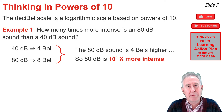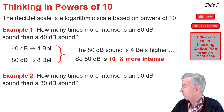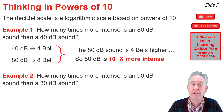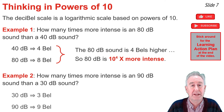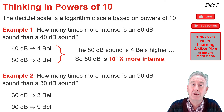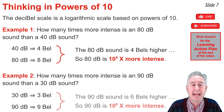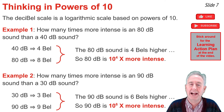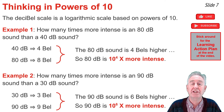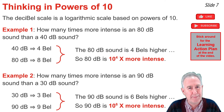Example two: how many times more intense is a 90 decibel sound than a 30 decibel sound? Converting: 30 decibels is 3 bells and 90 decibels is 9 bells. The 30 dB sound is 10³ times more intense than the threshold of hearing, and the 90 dB sound is 10⁹ times more intense. Since the 90 dB sound is 6 bells higher, it is 10⁶ times more intense than the 30 dB sound. The key method: take the difference in bell ratings and raise 10 to that power.